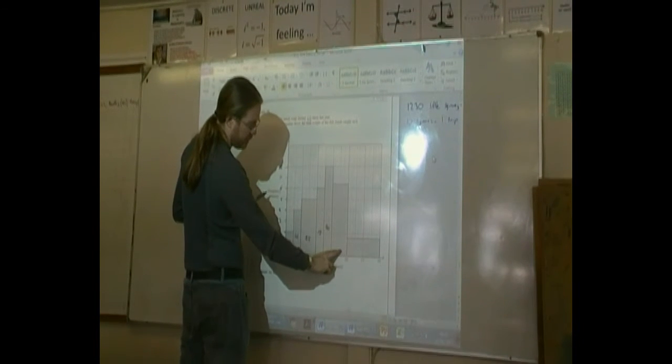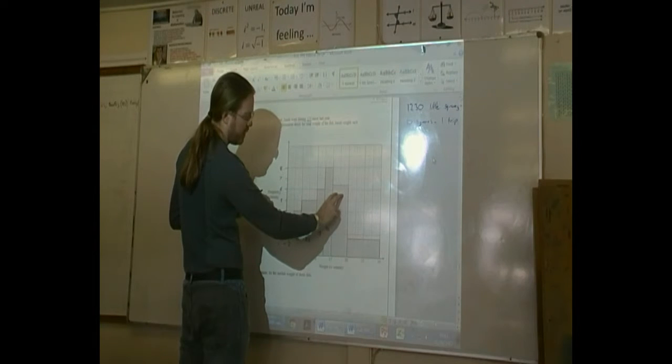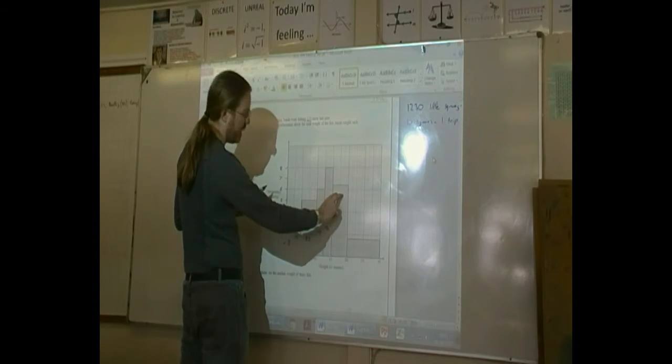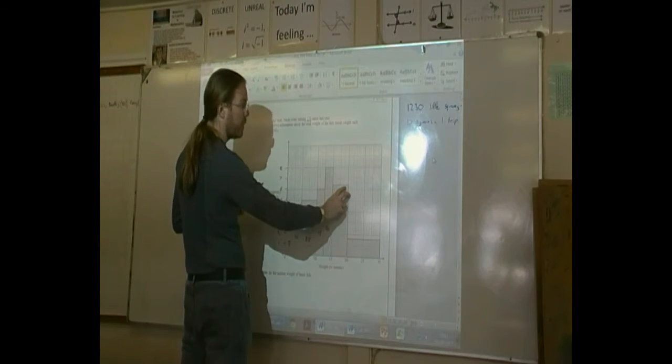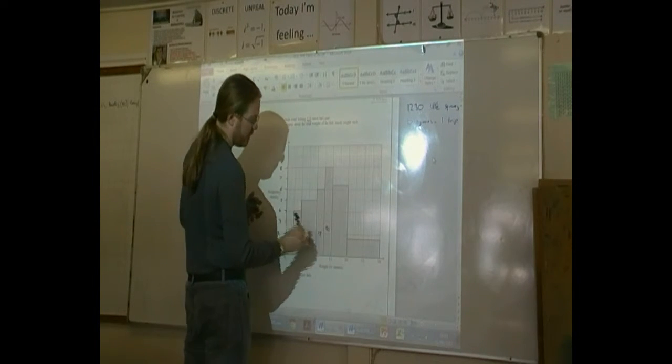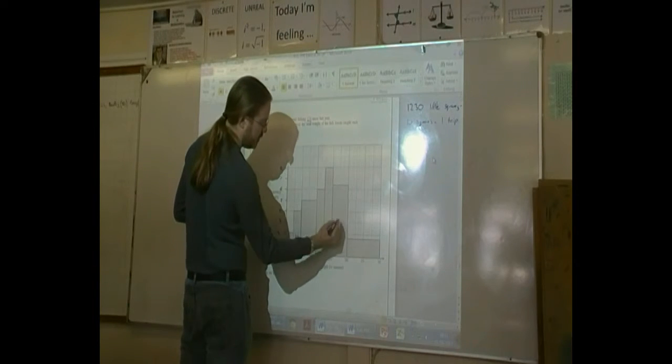So we've got 5, 10, 15, 20, 25, 30. And then we've got another 10, 20 squares there. So that's going to be 32. Yeah, 5, 10, 15, 20, 25, 30, 32.